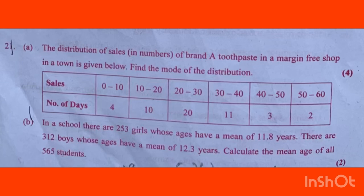In terms of a brand, a toothpaste sales distribution in a town is given below. Find the mode of the distribution. The mode will be found. The mode is where the frequency will be the highest — that is 20, which corresponds to the class 20 to 30.